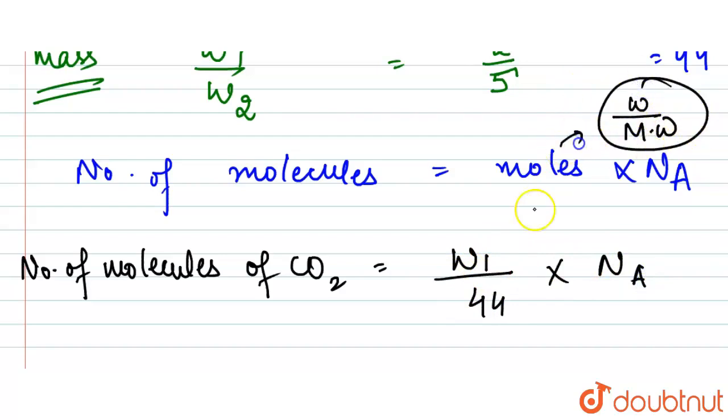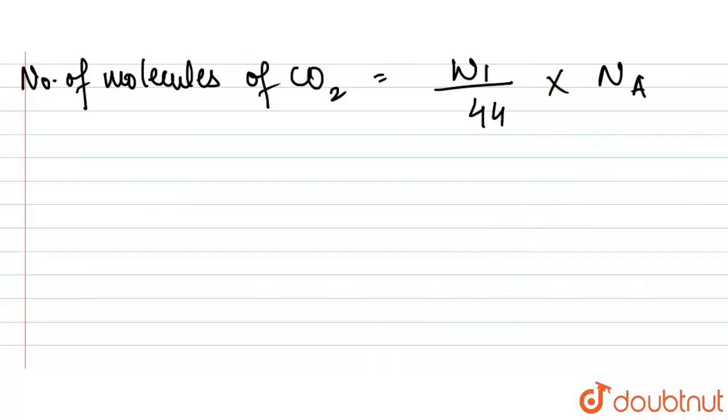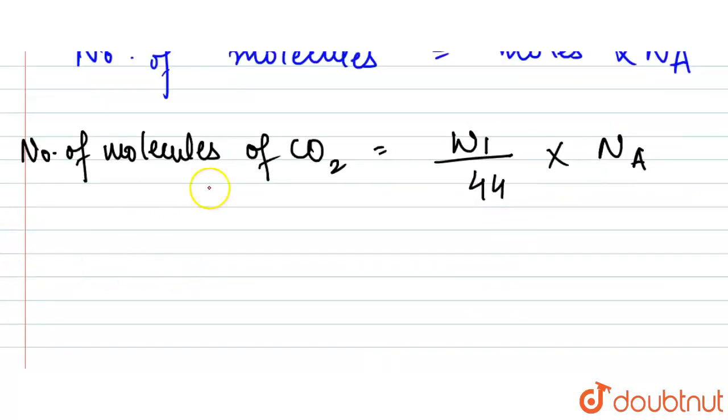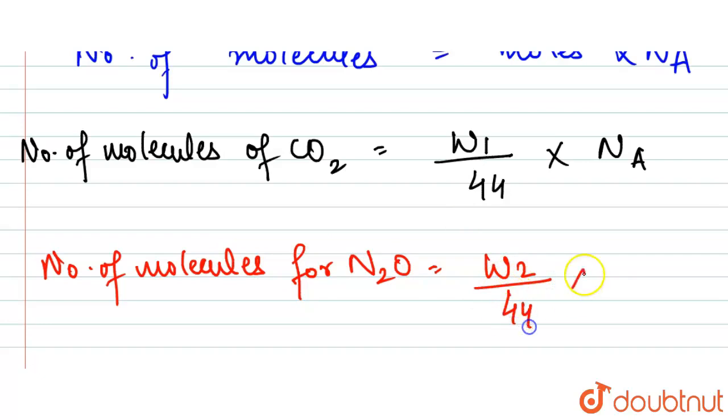Now if we see for N2O, if we have number of molecules for N2O, then that will be w2/44 times Avogadro's number.